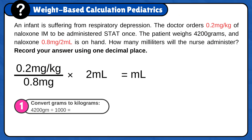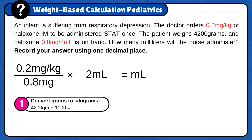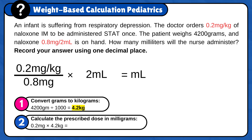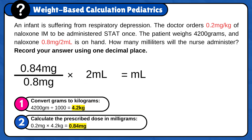First, convert grams to kilograms: 4,200 grams divided by 1,000 is 4.2 kg. Since you are converting from a smaller unit, gram, to a larger unit, kilogram, you will have a smaller number. Now, calculate the prescribed dose: 0.2 mg times 4.2 kg is 0.84 mg. Finally, plug the answer in the formula and calculate it: 0.84 mg divided by 0.8 mg times 2 milliliters. Milligram cancels out and the answer is 2.1 milliliters.